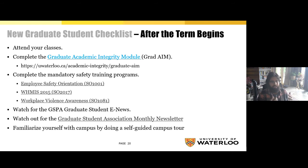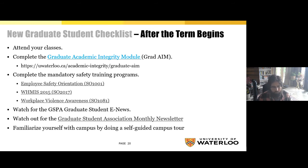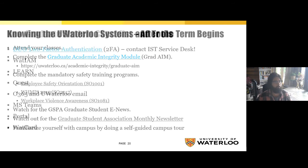Complete the mandatory safety training programs — all graduate students are required to complete three mandatory training programs: the Employee Safety Orientation, WHMIS 2015, and Workplace Violence Awareness. Watch for the graduate student e-news published by the GSPA and the GSA monthly newsletter, which has important updates about services, events, and advocacy initiatives including the BIPOC Collective and the Organized UW union drive. Once on campus, take a self-guided campus tour to orient yourself to the main Waterloo campus and learn about the places graduate students most frequently visit.